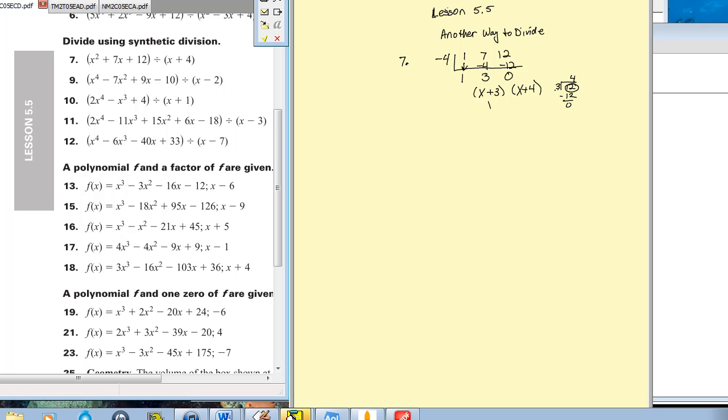So x times x is x squared, x times plus 4 is plus 4x, plus 3 times x is 3x and plus 12. So x squared plus 7x plus 12. Proving that I did it right because that was our problem.